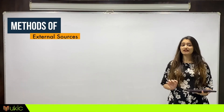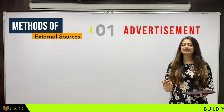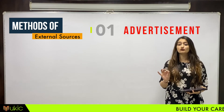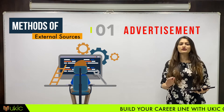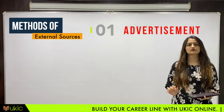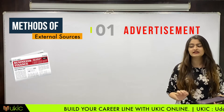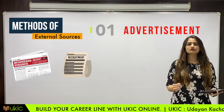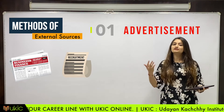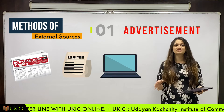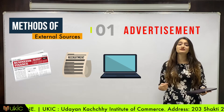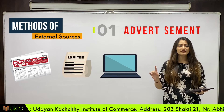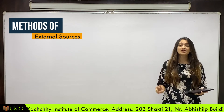Start with methods. The first method is advertisement. People always advertise when they need skilled or highly qualified workers. For advertisement, either they go to newspapers or journals. Or, now there is a new trend — they also give advertisements on the internet, based on your searching history, your qualifications. So the first method is advertisement.